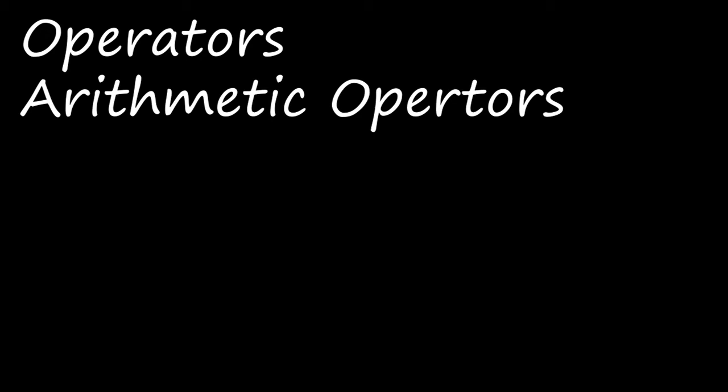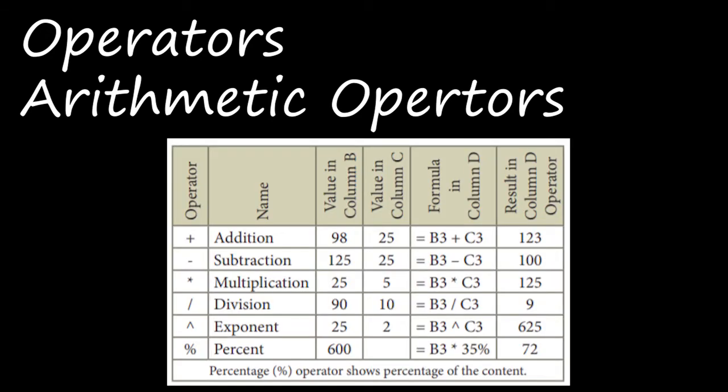Arithmetic operators - we all know these. Arithmetic operations are addition, subtraction, multiplication, division, exponent, and percent. For addition, the operator is plus. Looking at the list of arithmetic operations, they have given a formula and the result. The value in column B is 98 and the value in column C is 25.